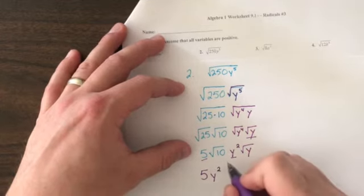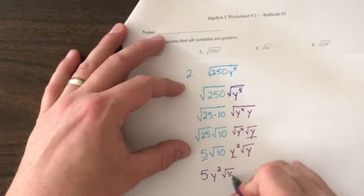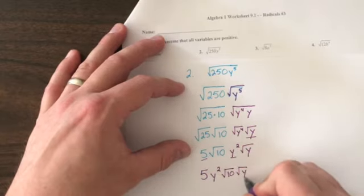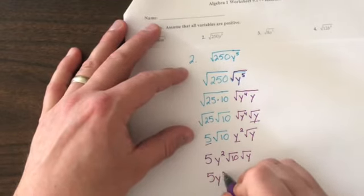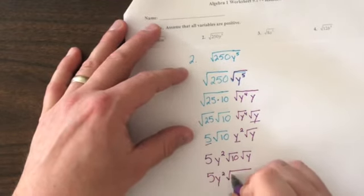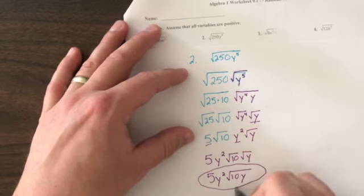And then we start with the radicals. The square root of 10 times the square root of y. But since those are both square roots, I can combine them and say 5y squared times the square root of 10y. This is my final answer.